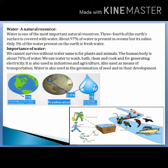Water is a natural resource. Three-fourths of the earth's surface is covered with water, present in oceans, rivers, seas, and ponds. 97 percent of water is saline water, which is not possible to drink. Only three percent of water is fresh water, and fresh water sources are underground water, lakes, and rivers. But due to pollution and sewage, this water is also not fit for drinking.